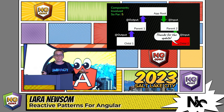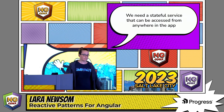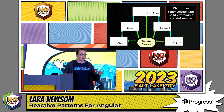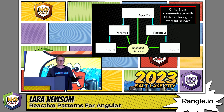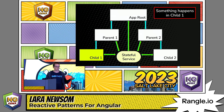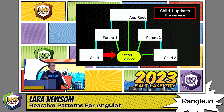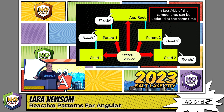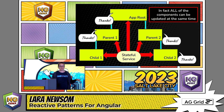There's a lot of opportunity to mess something up. What we need is a stateful service that can be accessed from anywhere in the application. Here we have a stateful service connected to all the classes in our application. Child one emits an event, passes that data to the stateful service, which then passes it to child two — a much shorter feedback loop. In fact, that stateful service could pass that data to all components at the exact same time.